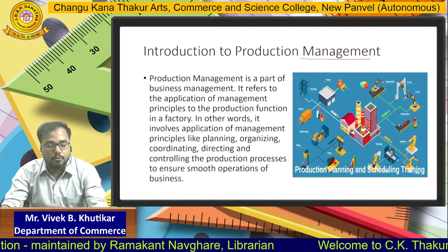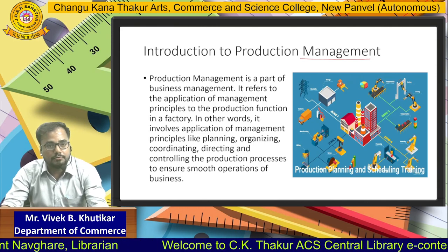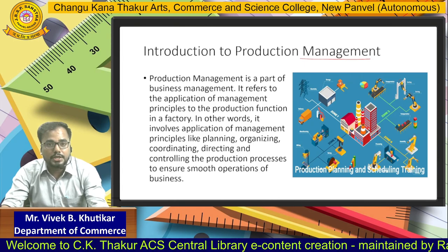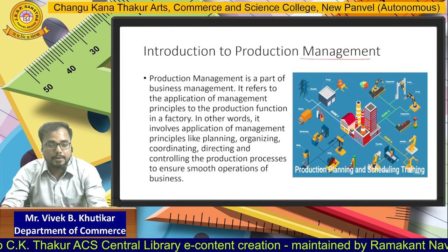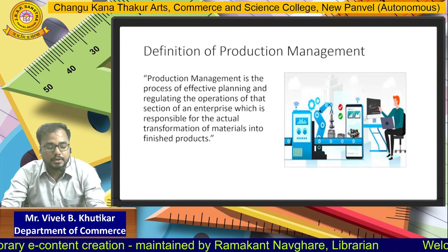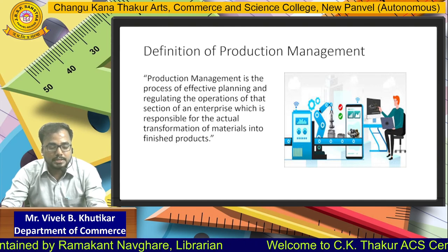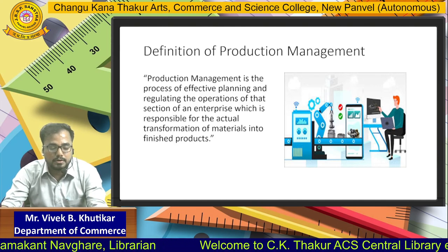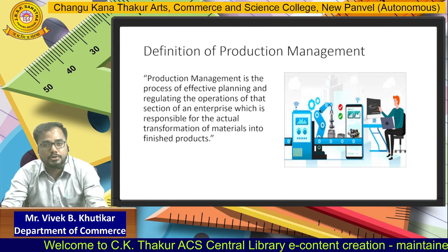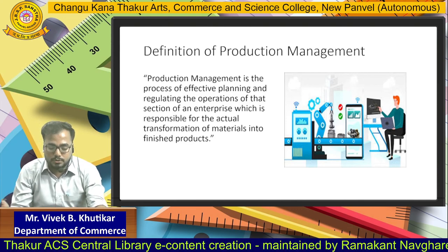Production Management is the part of Business Management. It refers to the application of management principles to production functions in a factory. Basically, Production Management is applicable where the actual production takes place. In other words, it involves application of management principles like Planning, Organizing, Coordinating, Directing and Controlling the Production Processes. Production Management is the process of effective planning and regulating the operations of that section of an enterprise which is responsible for the actual transformation of material into finished goods. Production is nothing but the process of conversion of raw material into semi-finished goods or semi-finished goods into finished goods. So, managing that entire conversion process is called Production Management.